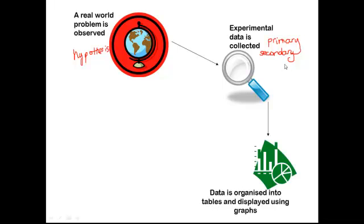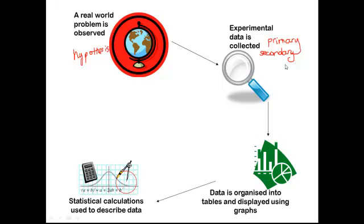Once we've collected our data we can organize the data into tables and graphs so that it's easy to understand, and we'll also do some statistical calculations to describe the data. These calculations are things you've probably already seen before: mean, median, mode, range, things like that. That's how we summarize the data.